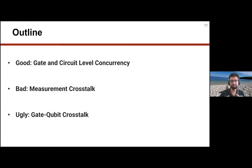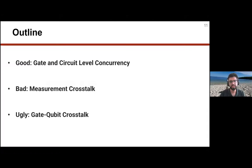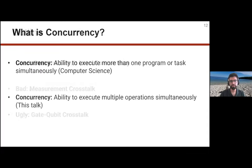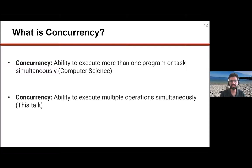First I'll talk about a topic that might be familiar if you've taken a CS class: concurrency. Specifically, what good we can do with gate-level and circuit-level concurrency, and what the challenges are in terms of readout crosstalk and other types of crosstalk. Concurrency here means the ability to execute multiple operations simultaneously.